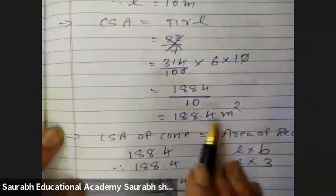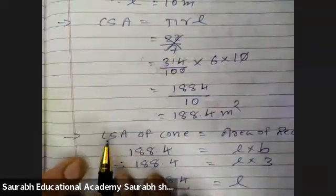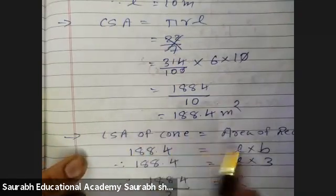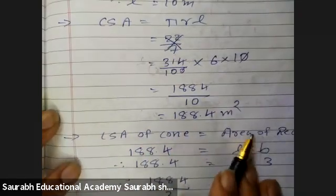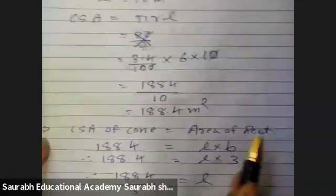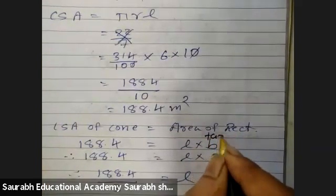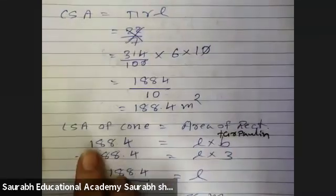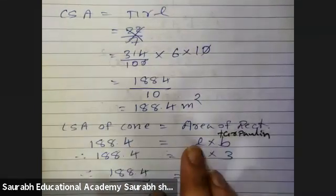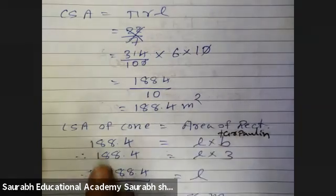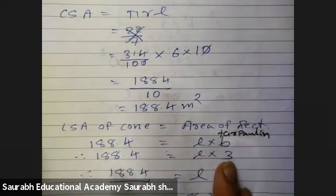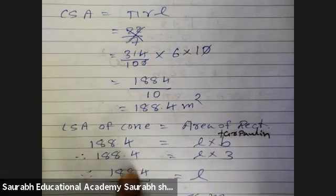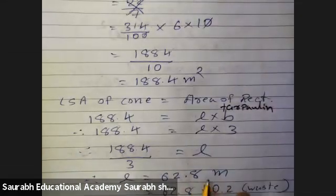Curved surface area of the cone equals area of the tarpaulin rectangle. So 188.4 equals Length into Breadth. Breadth is given as 3, so Length equals 188.4 divided by 3, which gives 62.8 meter.